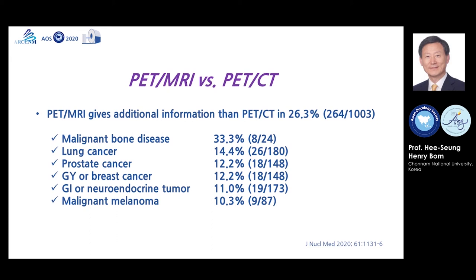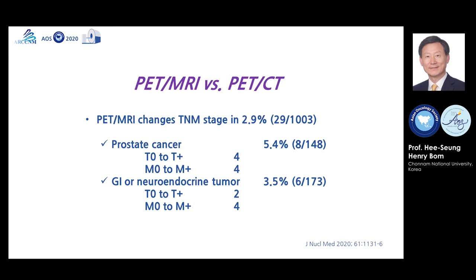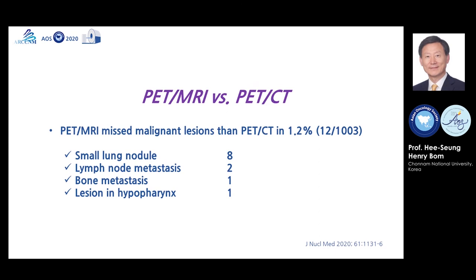Among malignancies, PET-MRI gives additional information in 53 patients including malignant bone disease, lung cancer, prostate cancer, and gastrointestinal or neuroendocrine tumors. PET-MRI changes TNM stage in 3%, especially in prostate cancer and gastrointestinal or neuroendocrine tumors. PET-MRI misses malignant lesions compared to PET-CT in 1.2% of cases, which includes small lung nodules, lymphoid metastasis, bone metastasis, and lesions in the hypopharynx.